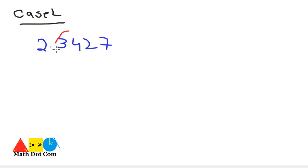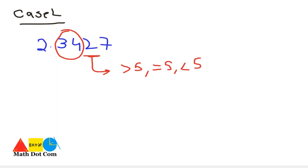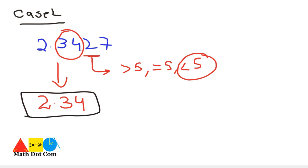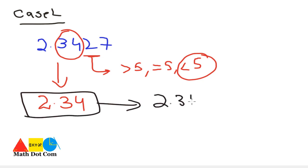As I want to keep 2 digits after the decimal, the digit that needs to be considered for approximating the value is this 2 — the digit after those digits we want to keep. Now in Case 2 this digit is less than 5. As it is less than 5, you will not add anything; it comes as it is in the approximate value and we drop the extra digits, giving us 2.34. This is the approximate value of 2.3427.